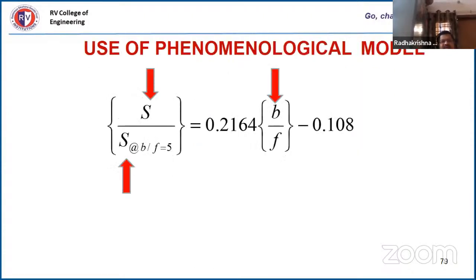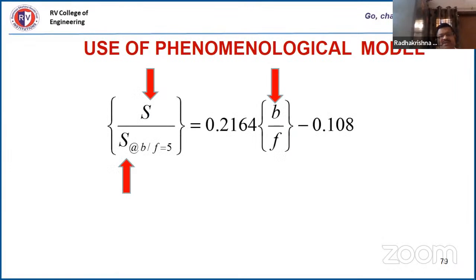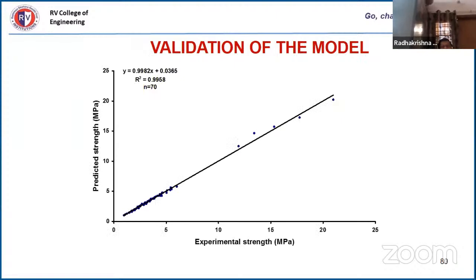30 MPa strength is not achievable in most Indian states with burnt bricks — only parts of UP and Andhra Pradesh/Telangana reach near 30 MPa. But this is possible with geopolymer. A phenomenological model was developed for ambient cured blocks with 140 × 5 samples: strength divided by strength at binder-fluid ratio 5 equals a constant × (binder-fluid ratio) − 0.108. Same model structure as before; only the constants A and B change.